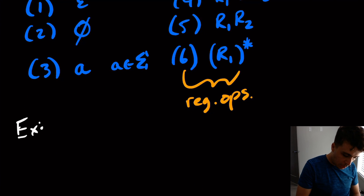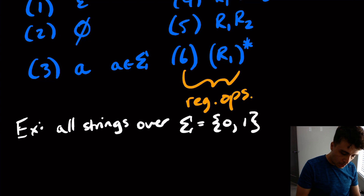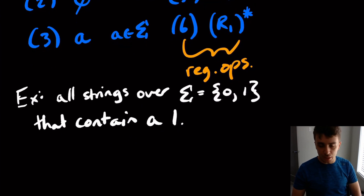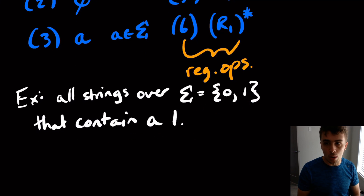Let's do the first example: all strings over sigma equals {0, 1} that contain a 1. So these are all binary strings that contain a 1 — basically everything that has a 1 in it.